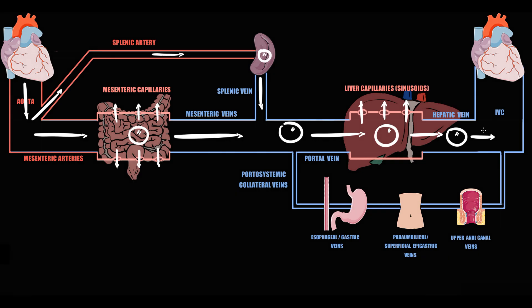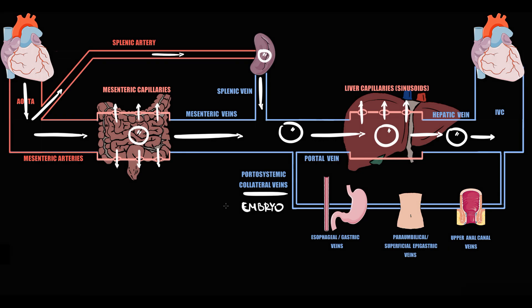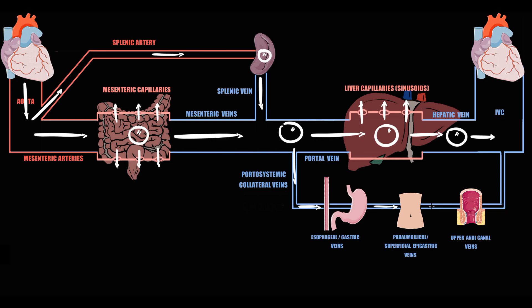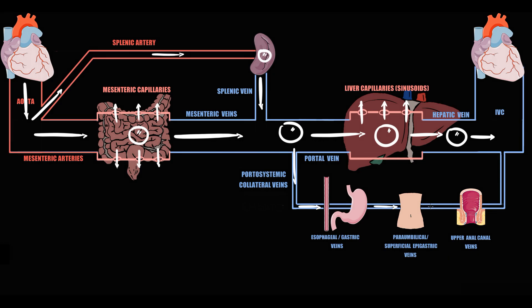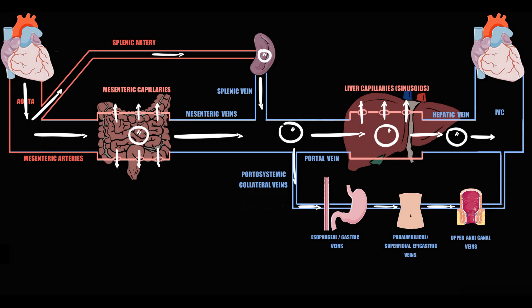We also have to know that in this system we have additional vessels that remain from embryogenesis, which we call portosystemic collateral blood vessels. Back in embryogenesis these vessels were crucial: they provided flow to esophageal and gastric veins, to paraumbilical and superficial epigastric veins located on the anterior abdominal wall, and also to upper anal canal veins, from which blood is drained into the inferior vena cava.